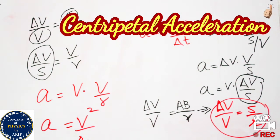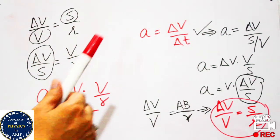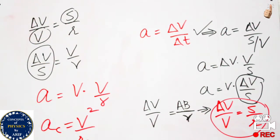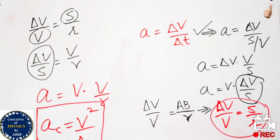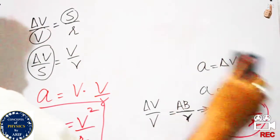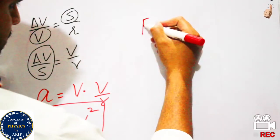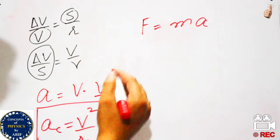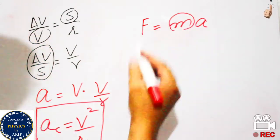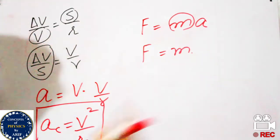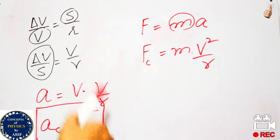This acceleration is the centripetal acceleration because the body is moving in a circular path, and the force acting on it keeps it in that circle — otherwise the body would go outside. From this acceleration, we can find centripetal force using Newton's second law: F = ma. Since a = v²/r, the centripetal force is F = mv²/r.